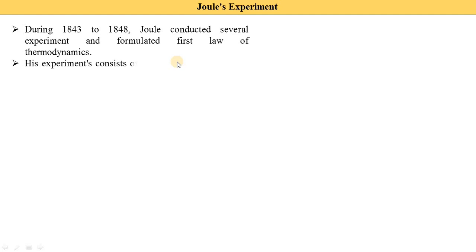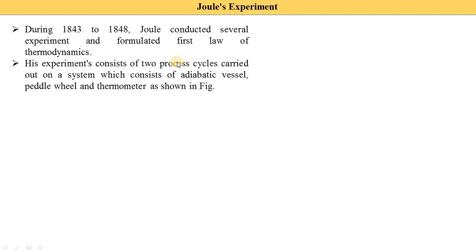His experiment consists of a two-process cycle. You know that in the Otto cycle, diesel cycle, Rankine cycle, and Brayton cycle, there are four to five processes. But in the Joule experiment, there are only two processes. This cycle consists of two processes carried out on a system which consists of an adiabatic vessel, a paddle wheel, and a thermometer as shown in this figure.